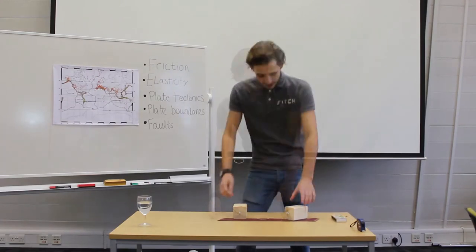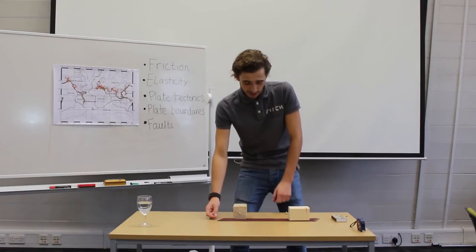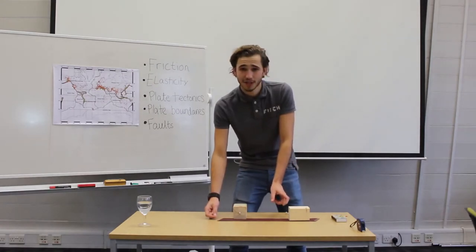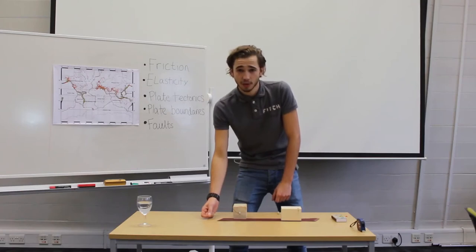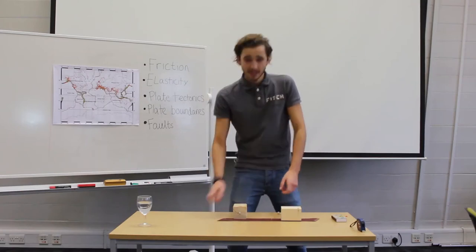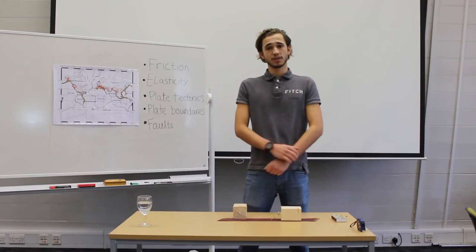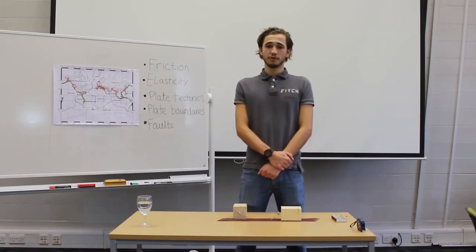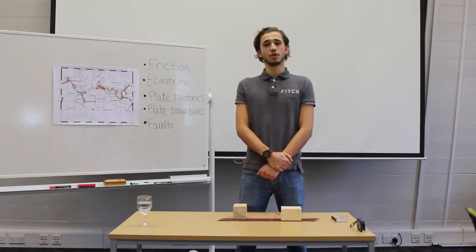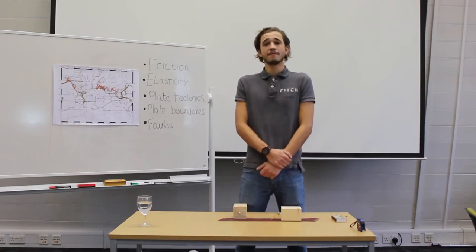Now back to our model. So as you continue to pull on the string, you'll notice that the elastic band stretches more. And eventually, this causes the block to suddenly move. The reason that the block moves is because the pulling force overcomes the frictional force that holds it in one place. So overall, the smooth and steady pulling of the string does not lead to a predictable movement of the block. The block moves every now and then in variable amounts.